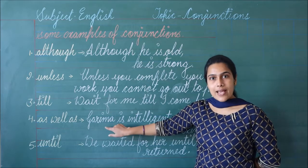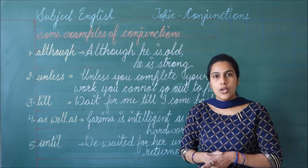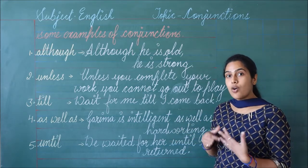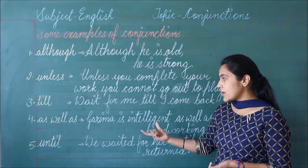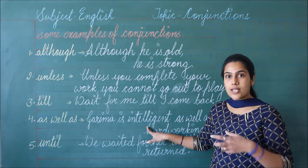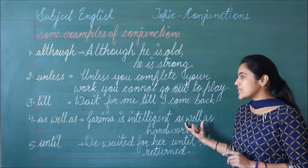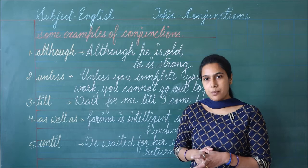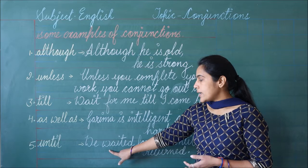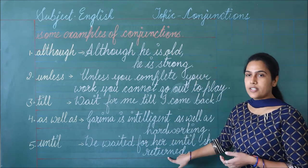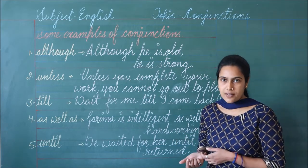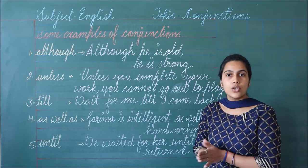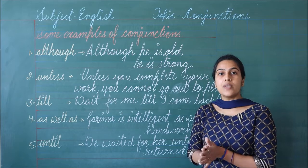Then the fourth one is 'as well as'. As well as का use हम तब करते हैं जब हम दो चीज़ों को एक साथ बोलना चाहते हैं. Like: Karma is intelligent as well as hard working. Karma intelligent भी है और उसके साथ hard working भी है — हम उसकी additional quality भी बताना चाहते हैं, तो हमने 'as well as' का use किया. Then the fifth one is 'until'. Until और till दोनों का same meaning होता है, but until में थोड़ा negative sense होता है. Like: We waited for her until she returned — जब तक वो वापस नहीं आई, हमने उसका wait किया. But 'till' में हम कोई negative sense include नहीं करते; जब हम 'until' का use करते हैं, तो हम उसमें negative sense include करते हैं.